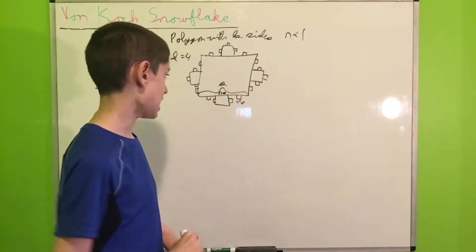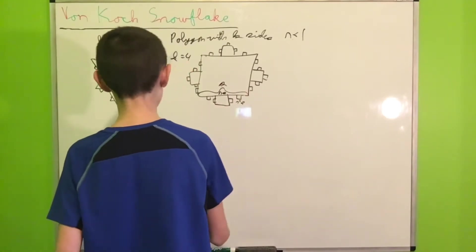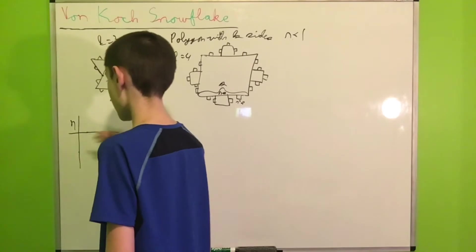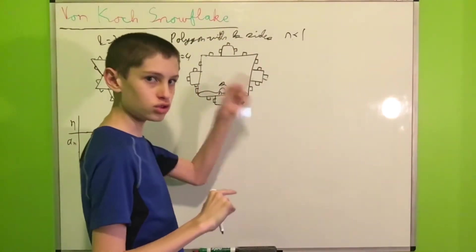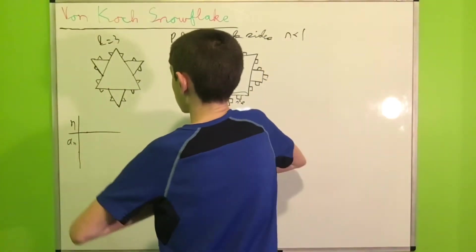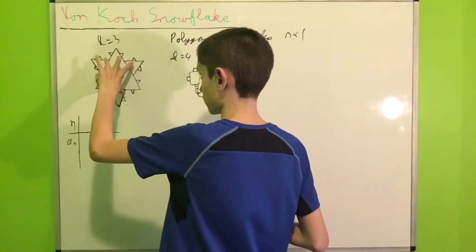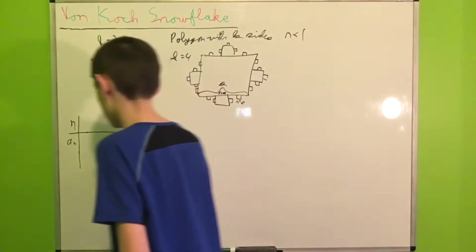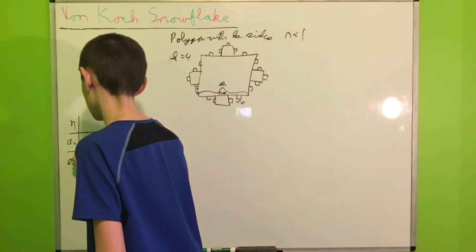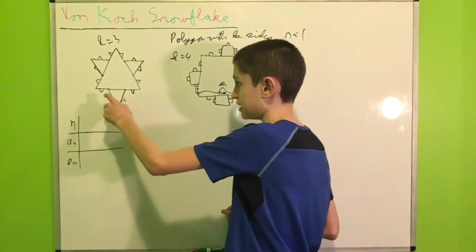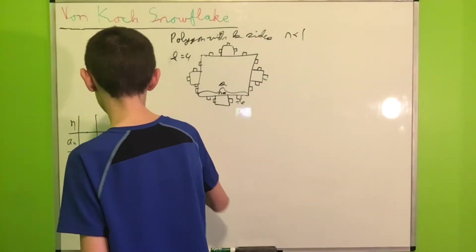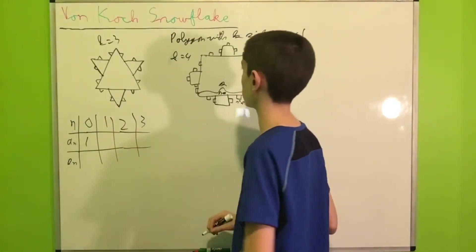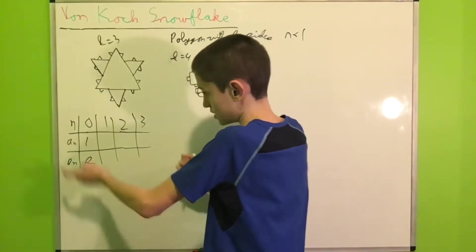Let's call our iterations n, where iteration zero is our original polygon. We let a_n be the number of new shapes that appear in each iteration. For example, for k equals 3 you have one shape in iteration zero, then three more in iteration one, then twelve more in iteration two, and so on. We also let s_n be the side length of each polygon in iteration n.